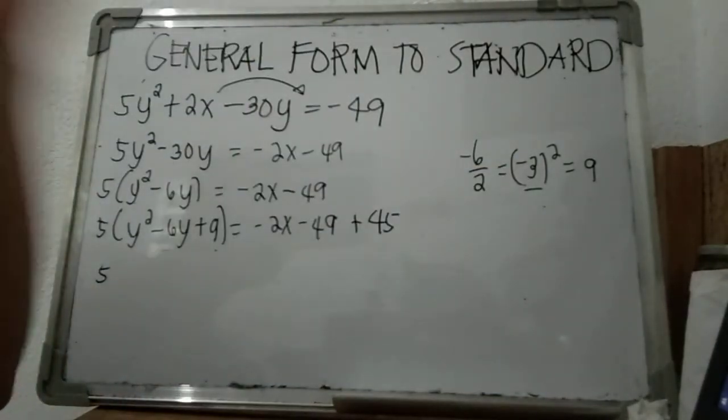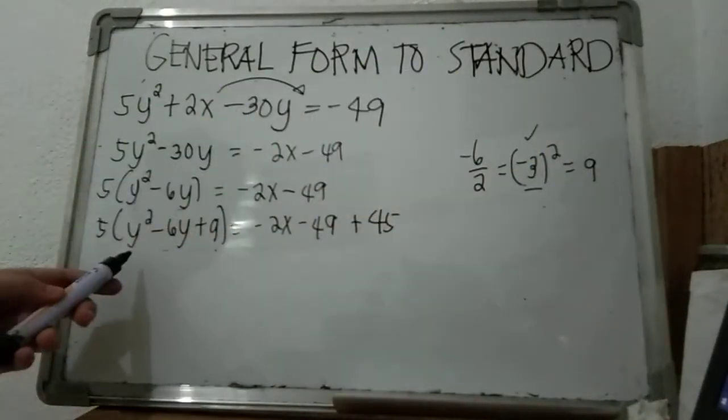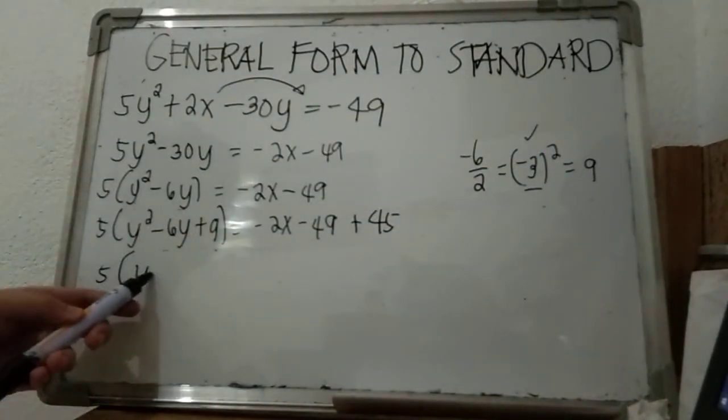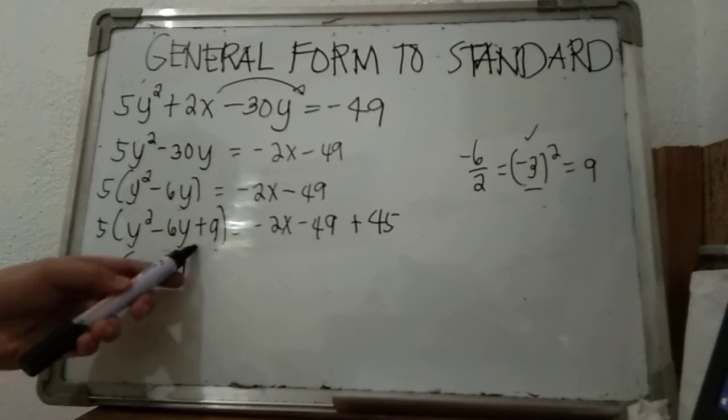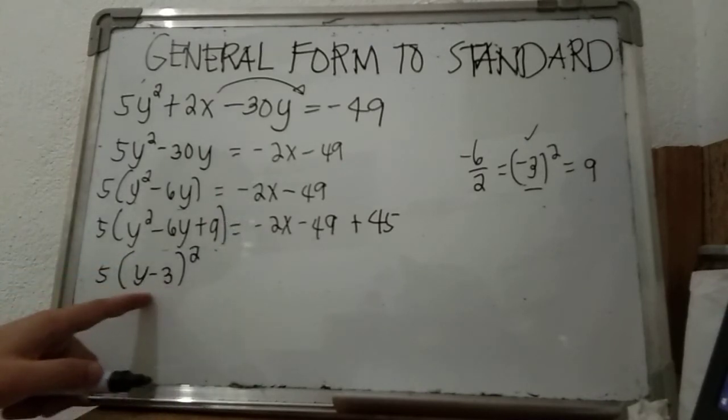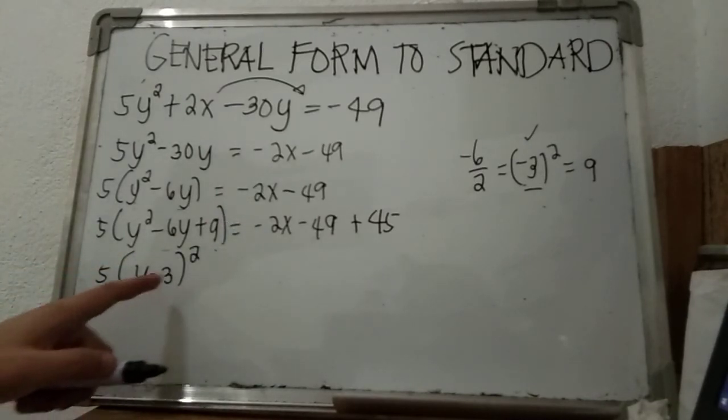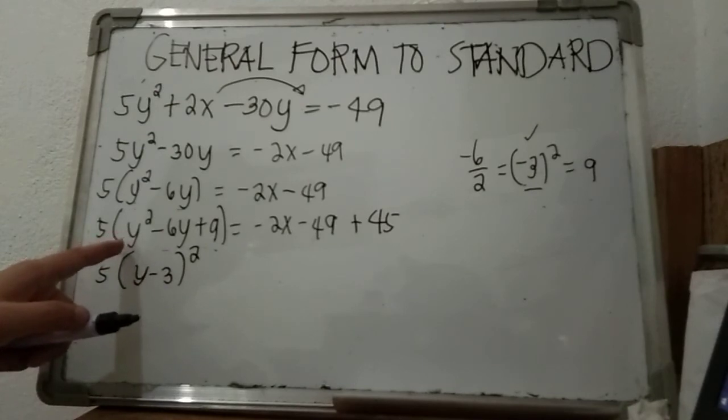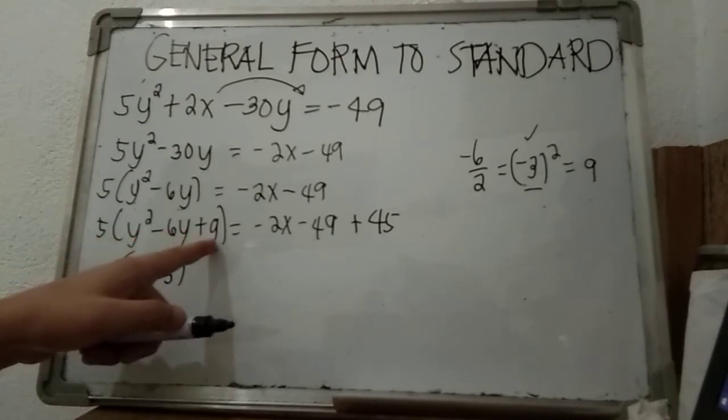Take that, so this is now (y minus 3)². It means that if we expand (y minus 3)², the expansion will be y² minus 6y plus 9.